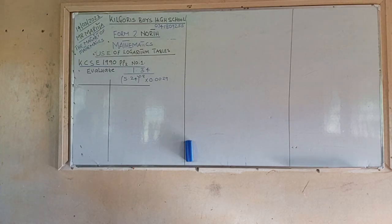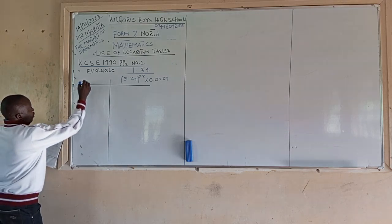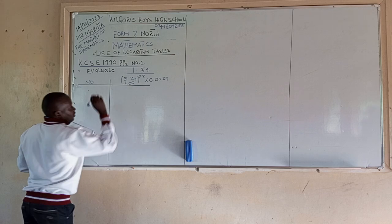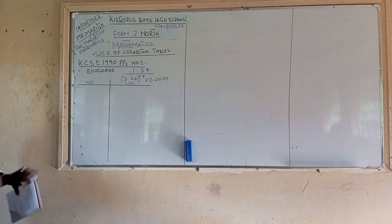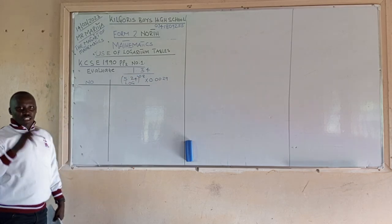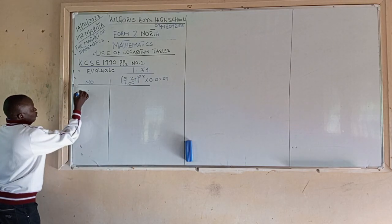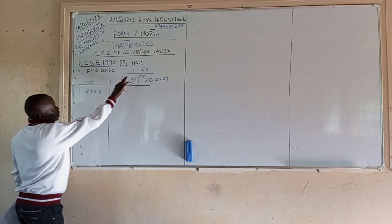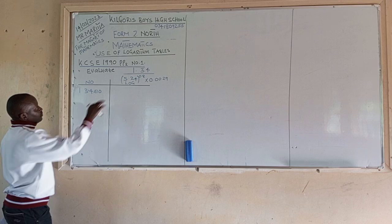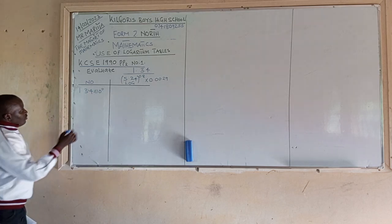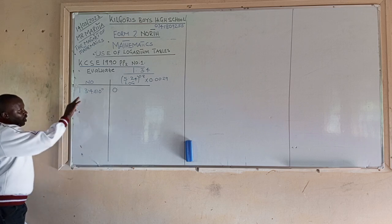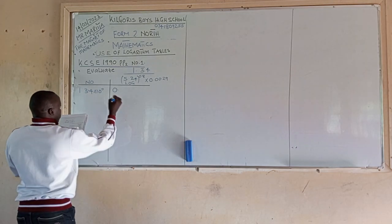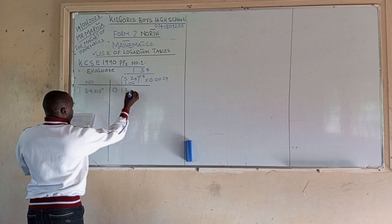When we are using these evaluating tables, we read a number and find its log. So we express 1.34 in scientific form. Since the decimal is already between 1 and 9, we write it as 1.34 times 10 raised to 0. We then read the log of 1.34 from the table, which reads as 0.1271.